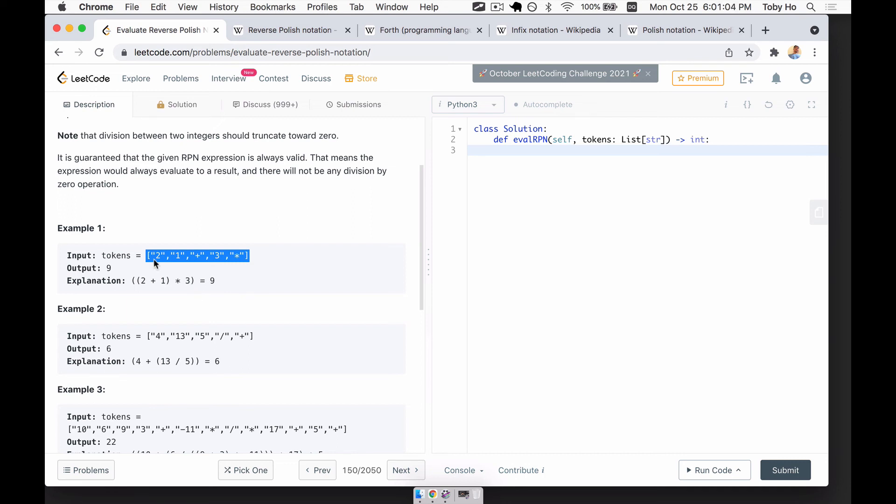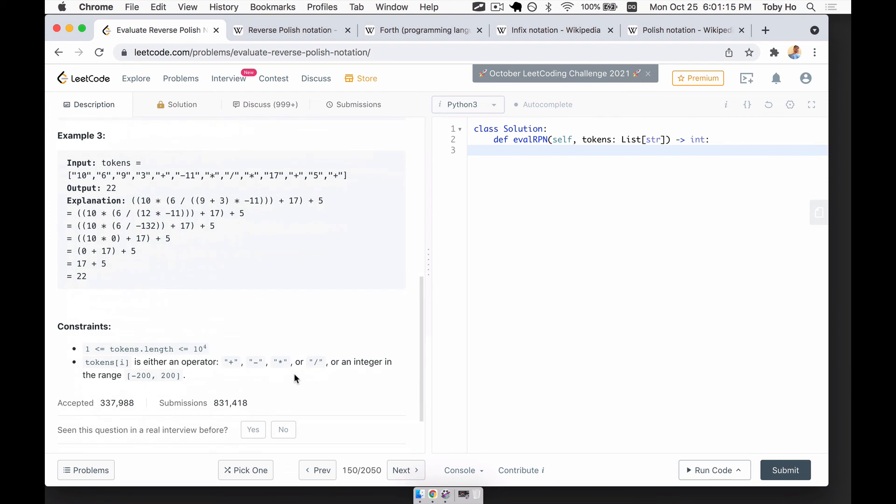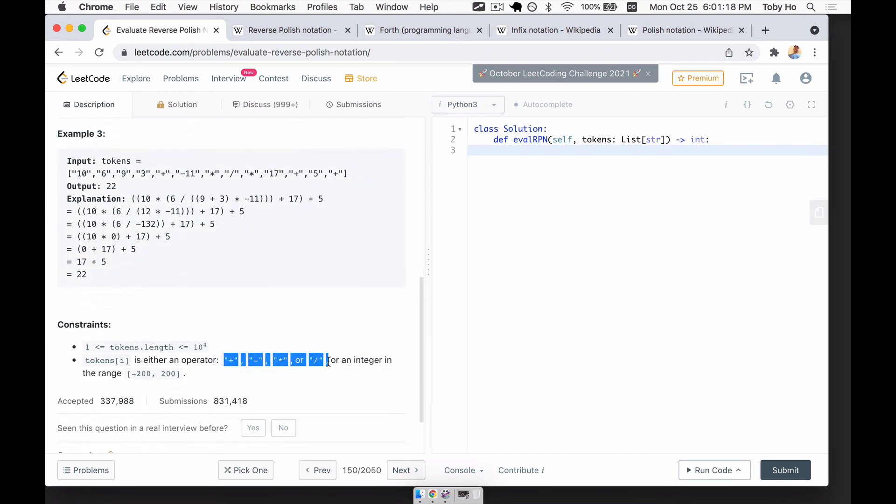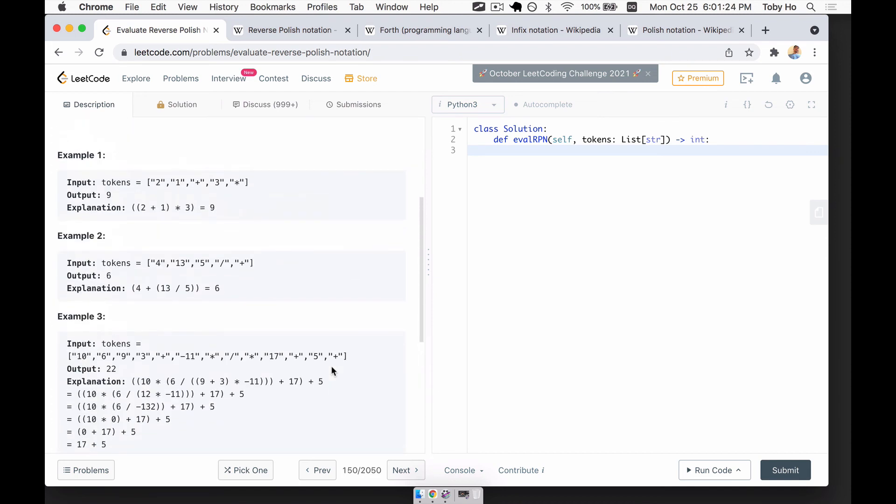The way they structure it is the input that you're given is an array of tokens or a list of tokens, depending on your programming language. Each token is simply a string. The string can either be a numeric string, like 1, 2 or 13, or it could be one of the four basic operators. And you only have to support these four: add, subtract, multiply, divide. And your job is to evaluate the notation and then come up with the answer at the end, which is going to be the number that ends up on the top of your stack after having evaluated all of these tokens.